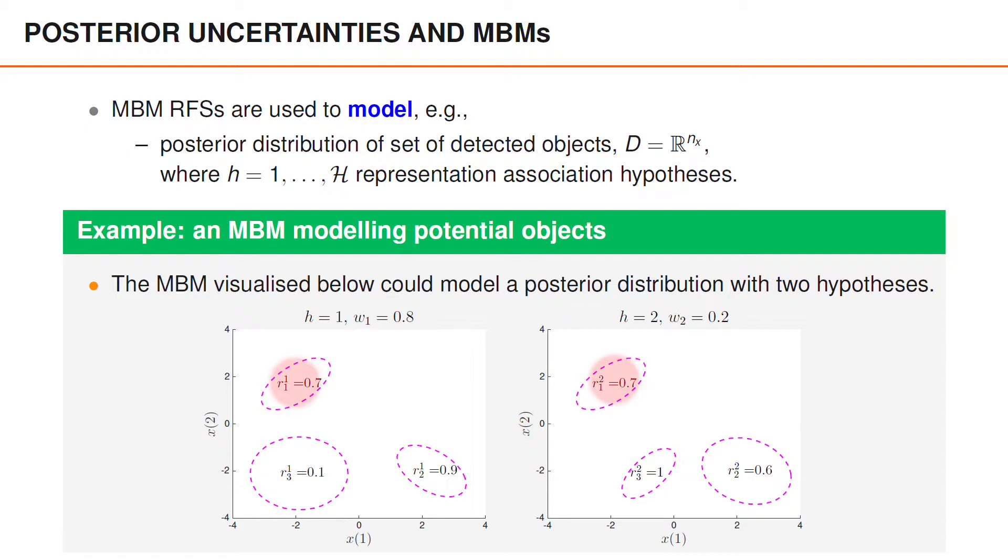In this example, the first Bernoulli component is the same in both hypotheses. This could, for instance, happen if the history of associations for that potential object is the same under both hypotheses. This Bernoulli component states that with 70% probability there is an object around a certain location. We also think there is an object around another location. The existence probability for that object is 0.9 under hypothesis 1, and 0.6 under hypothesis 2.